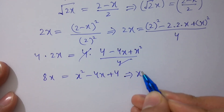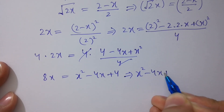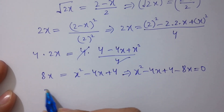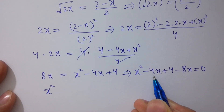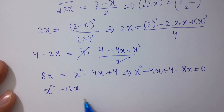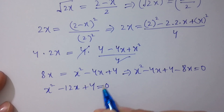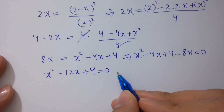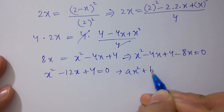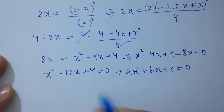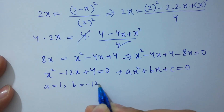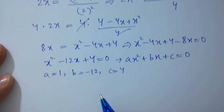Rearranging: x squared minus 4x plus 4 minus 8x equals 0. Combining like terms: x squared minus 12x plus 4 equals 0. This is a quadratic equation of the form ax squared plus bx plus c equals 0, where a is 1, b is minus 12, c is 4. Apply the quadratic formula.